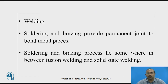Welding is a permanent joint where the base metal as well as the filler material is converted from solid state to liquid state, where they mix together. After solidification, it delivers coalescence — a strong bond formation between more than two elements. Soldering and brazing also provide a permanent joint to bond metal pieces. Soldering and brazing lie somewhere in between fusion welding and solid state welding; in these processes, the base metal is not converted from solid state to liquid state.